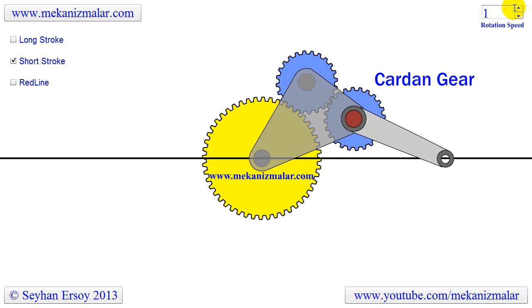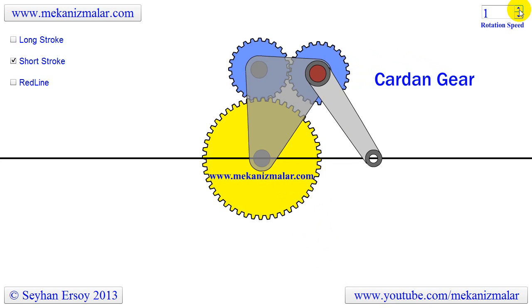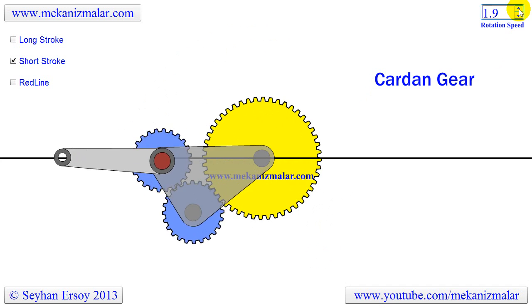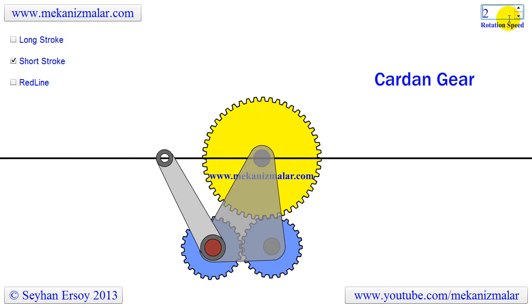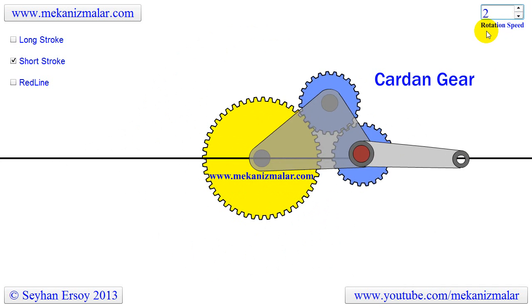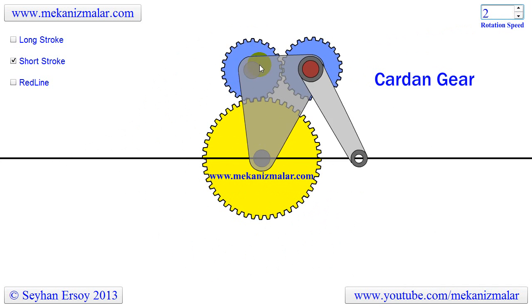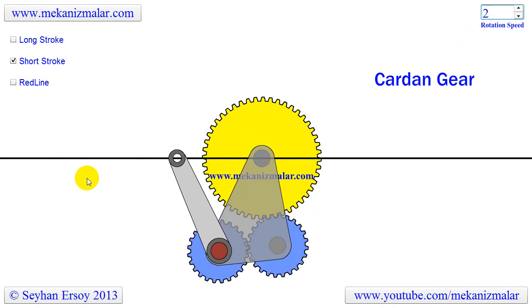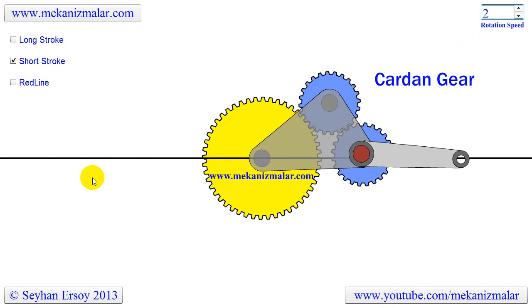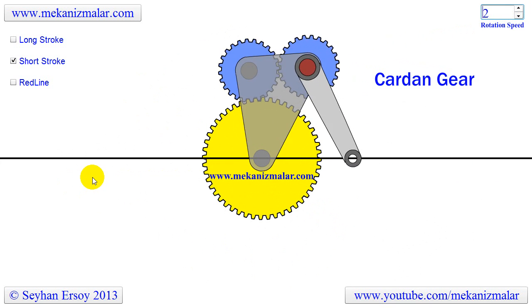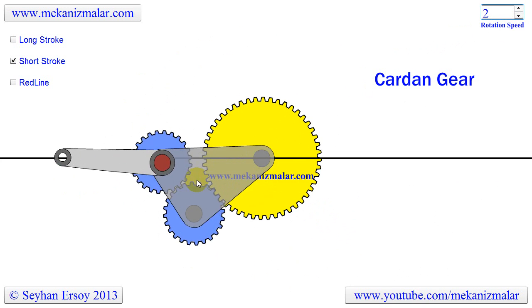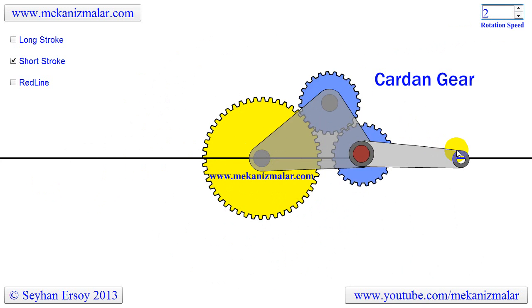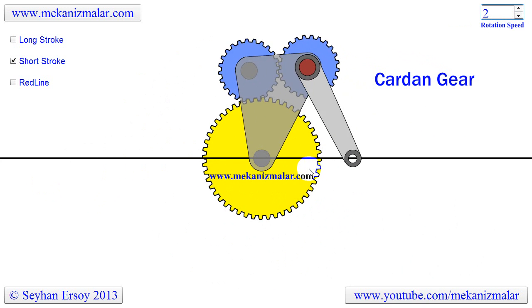Welcome to the video tutorials of Mekonismolar channel. The Cardan gear mechanism is invented by Girolamo Cardano in the 16th century. It is used to convert rotation motion to reciprocating linear motion, without using linkages or slideways.